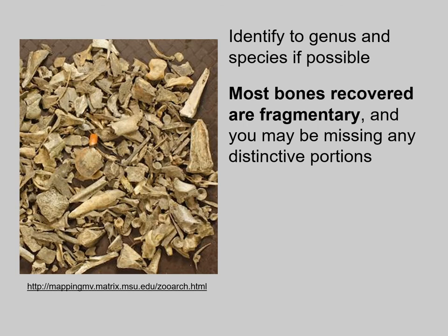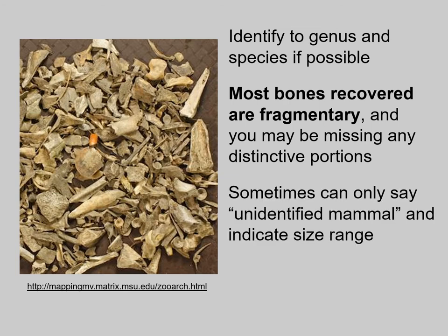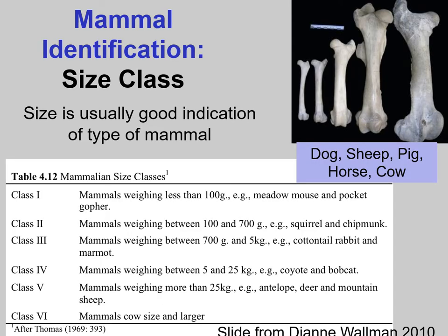However, most bones that we recover are fragmentary, and you may be missing any distinctive portions that would allow you to identify to species, or perhaps even to genus. Sometimes you can only say 'unidentified mammal' and indicate a size range. The size range is actually usually a good indication of the type of mammal — going from class 1, mammals weighing less than 100 grams (for example, meadow mouse), all the way up to class 6, mammals cow size and larger. For your part of the world, you are likely to have a limited number of mammals in any one class, so the size class can give a pretty good indication of the sort of mammal you might have.